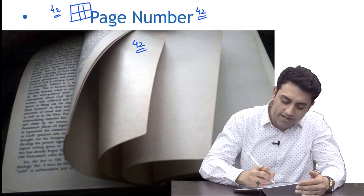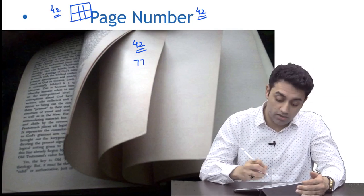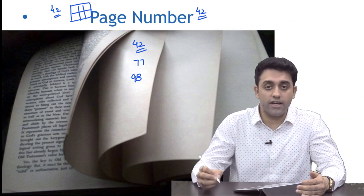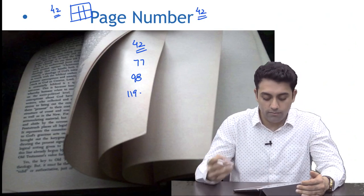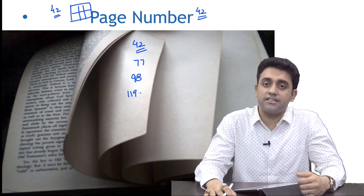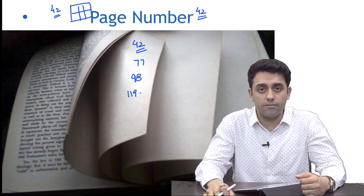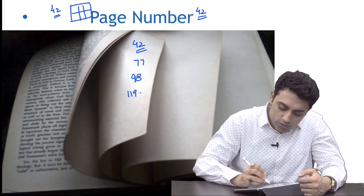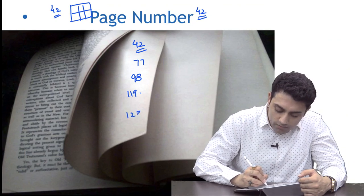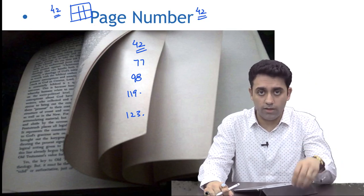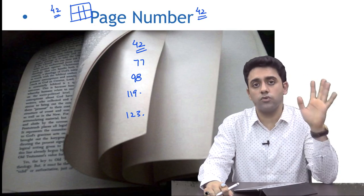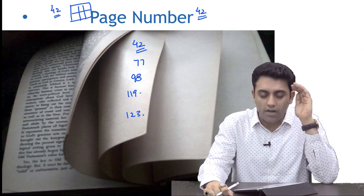Page number 77 is very much important. Page number 98 has inborn errors of metabolism topic. Page number 119 has neonatal sepsis. Page number 123, most common congenital heart in Turner syndrome is bicuspid aortic valve and most common cause of death in Turner syndrome is coarctation of aorta.